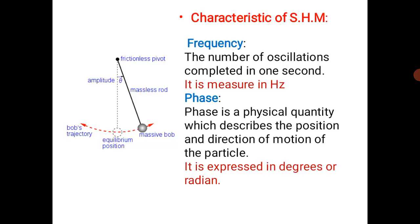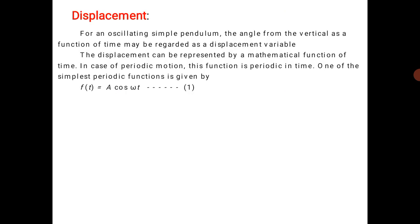Hello dear students, in the previous class we already discussed some characteristics of simple harmonic motion, that is frequency and phase. Frequency is the reciprocal of period. The unit of frequency is Hertz, or you can also call it cycles per second. Phase is a physical quantity expressed in terms of degrees or radians.